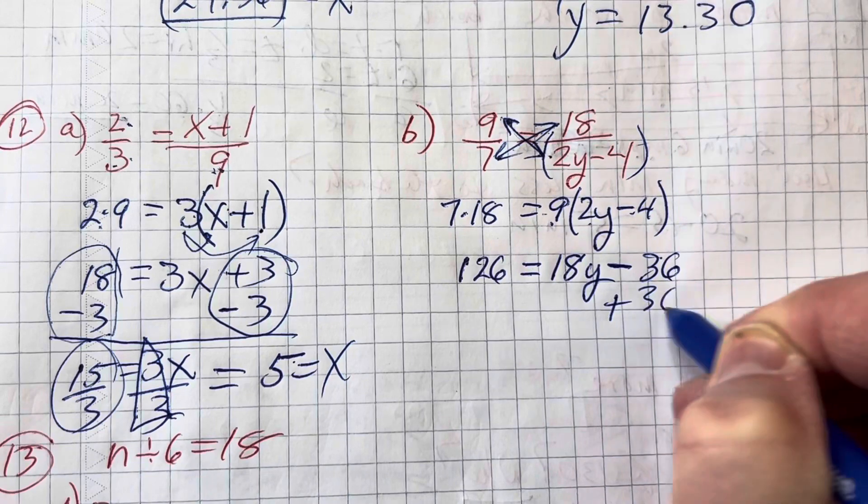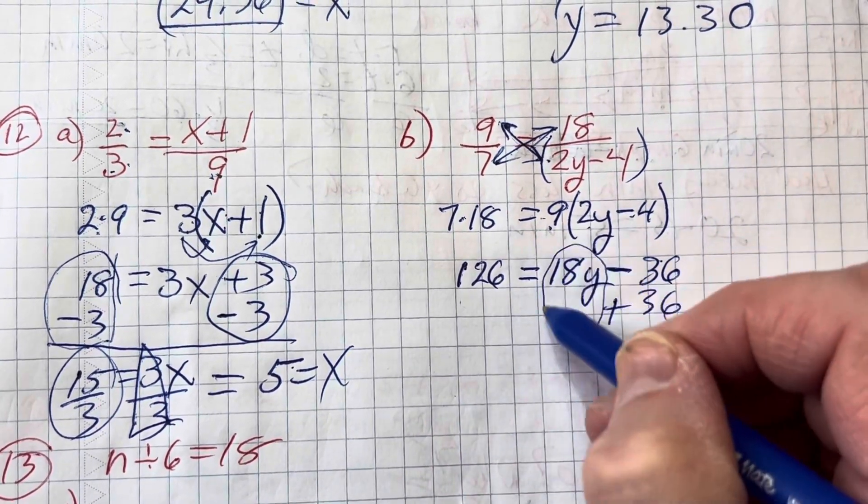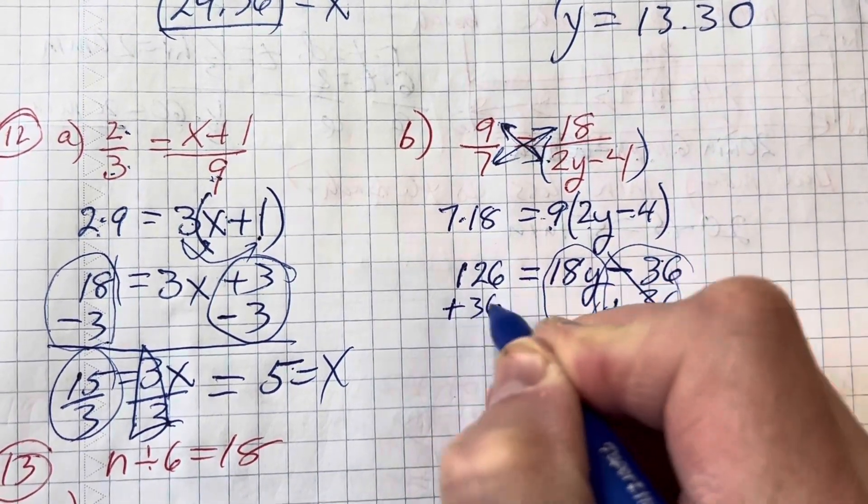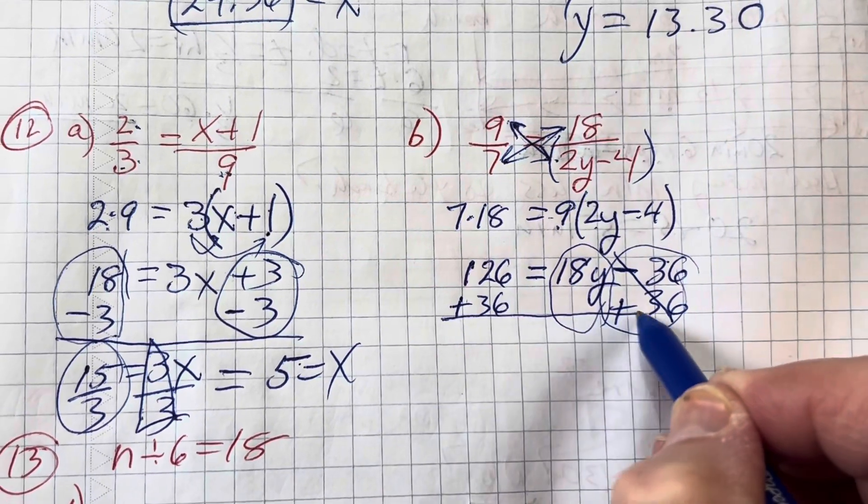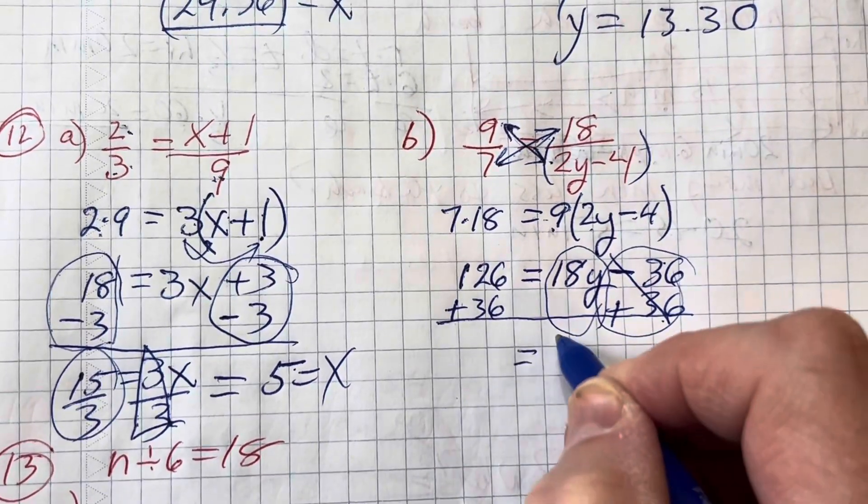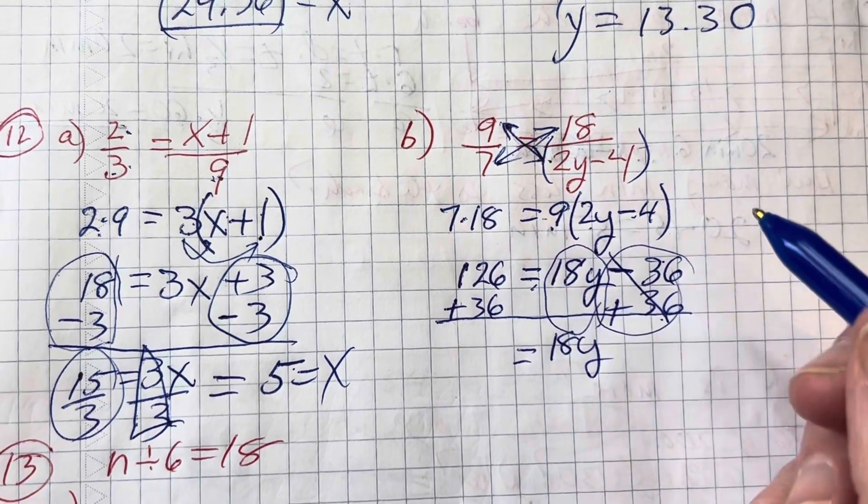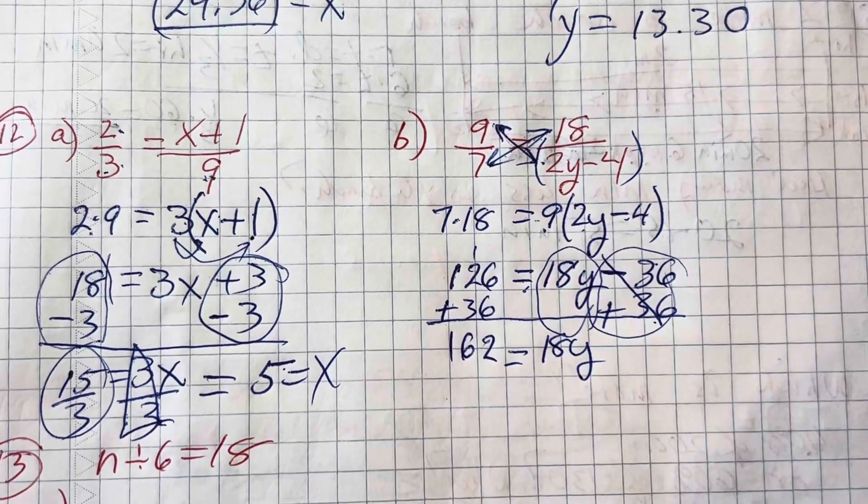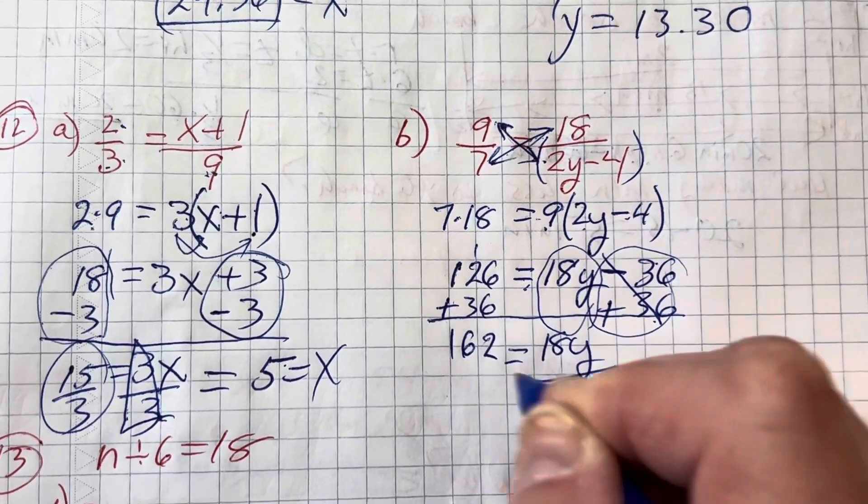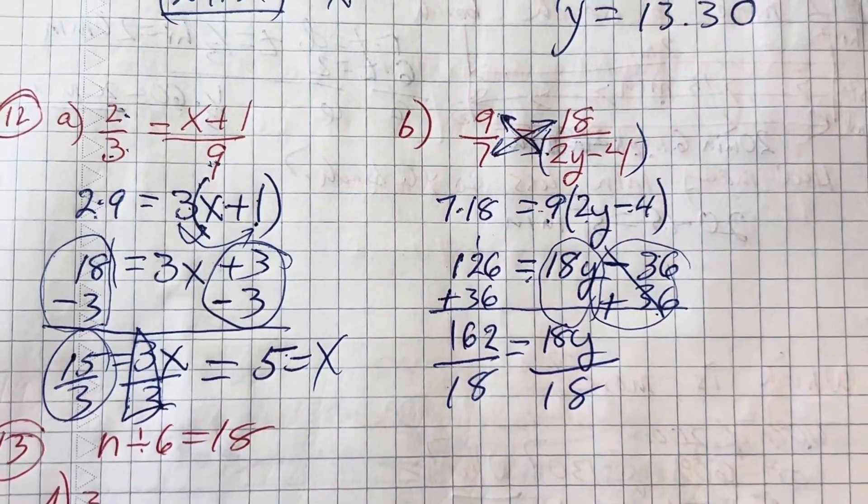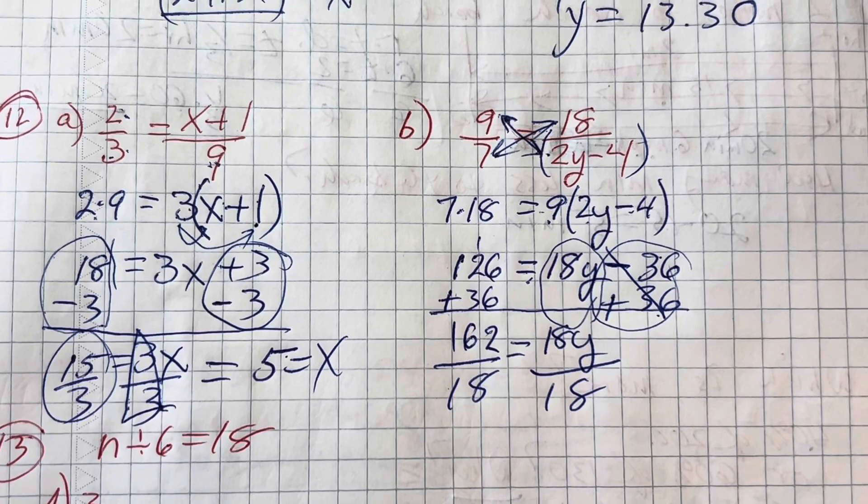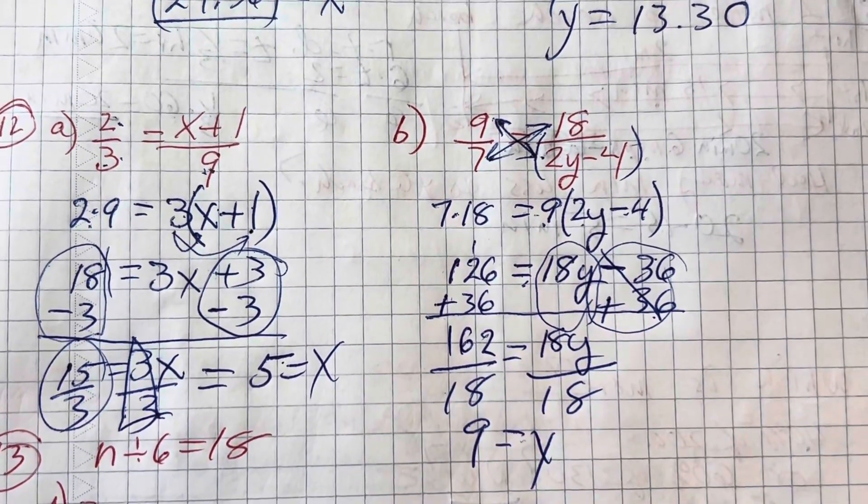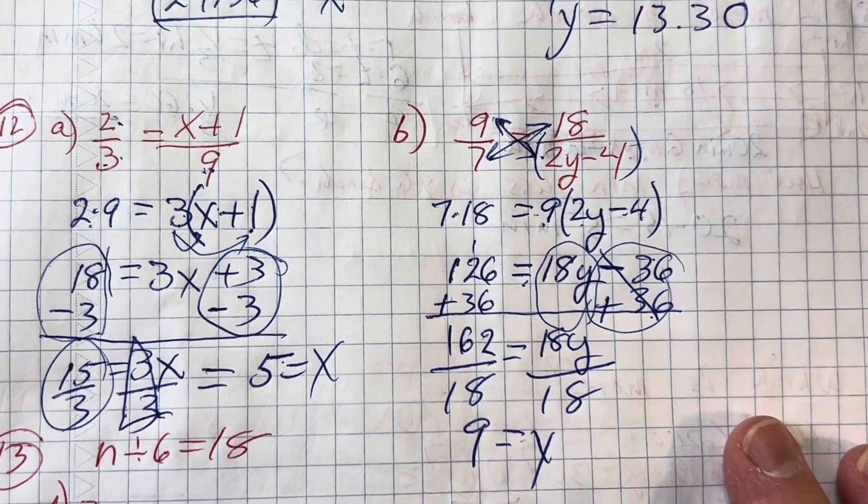Now I have to add 36 to both sides to get the variable term on one side and these numbers to drop out and become a 0 pair. That means I have to add 36 here as well. That becomes a 0. I get 18y equals 162. So 162 divided by 18, that gives me 9. Y equals 9. A nice round whole number.